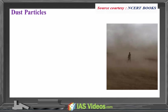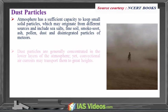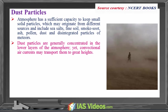The atmosphere has a sufficient capacity to keep solid particles which may originate from different sources and include sea salts, fine soil, smoke, soot, ash, pollen, dust and disintegrated particles of meteors. Dust particles are generally concentrated in the lower layers of the atmosphere, yet convectional air currents may transport them to greater heights.